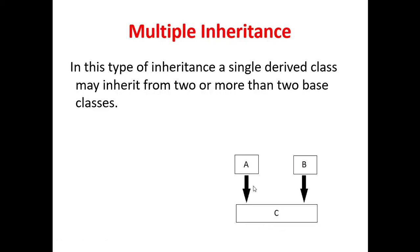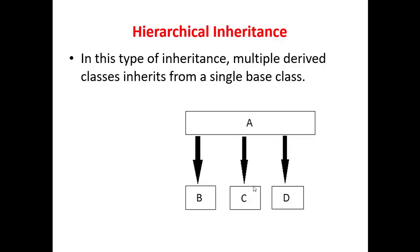Next is hierarchical inheritance. In this type of inheritance, multiple derived classes inherit from a single base class. For example, classes B, C, and D are all derived from class A. This forms a hierarchy, and such type of inheritance is called hierarchical inheritance.